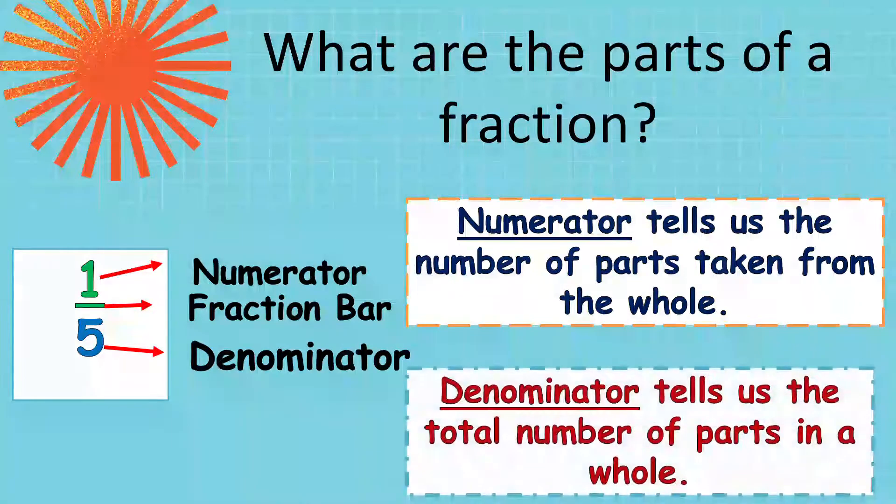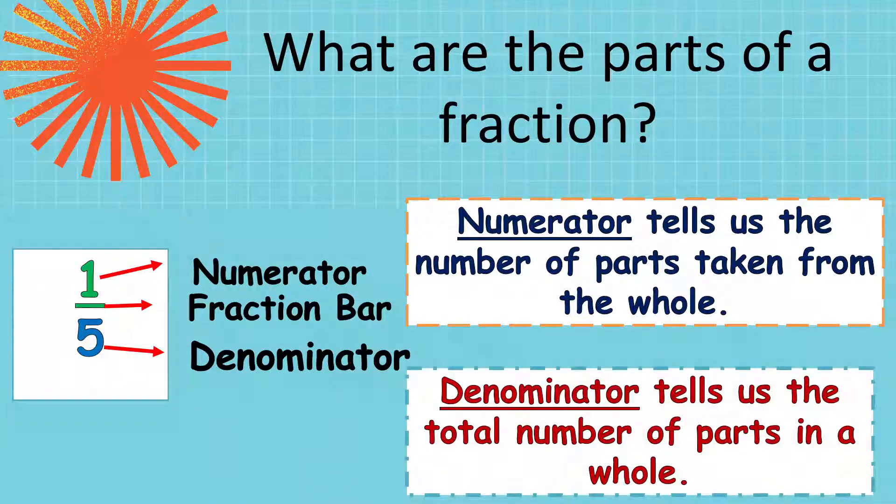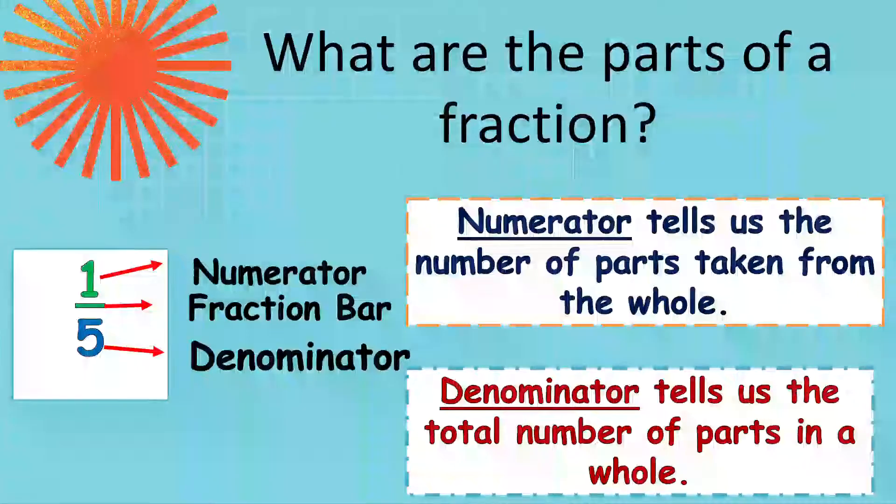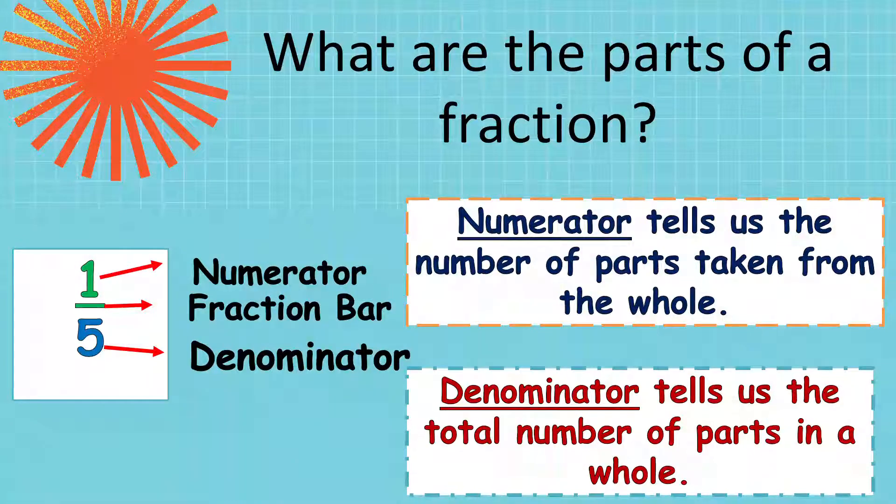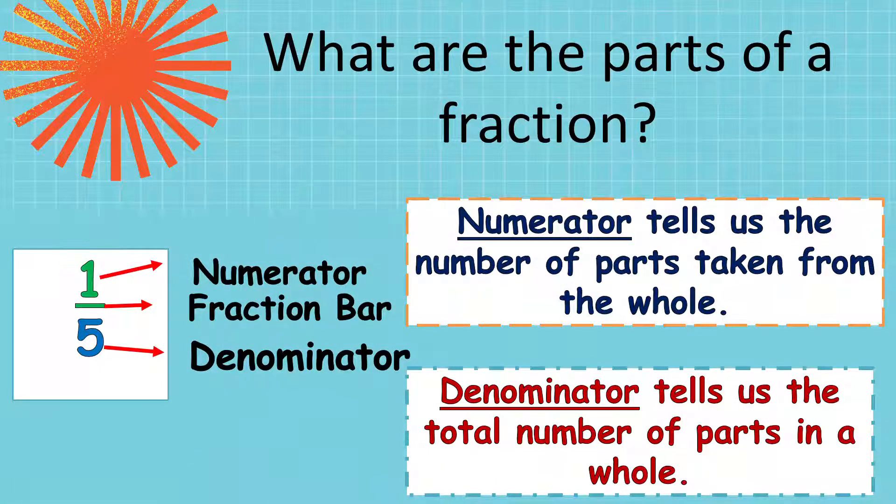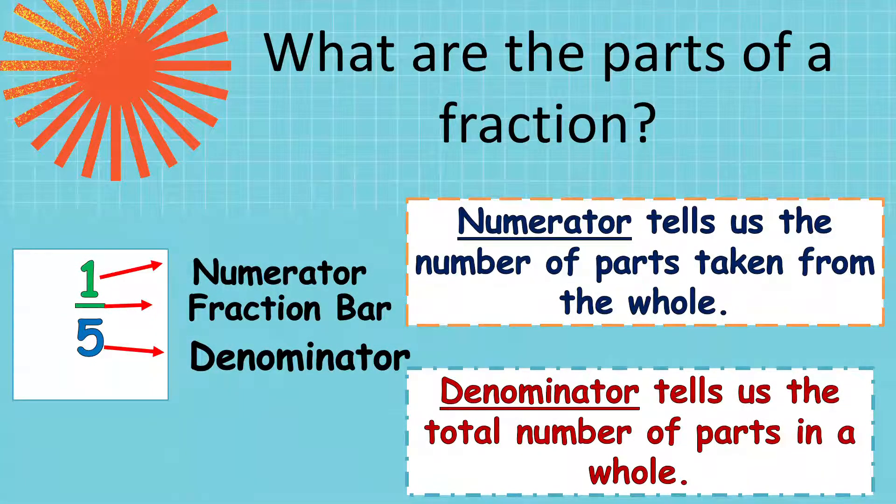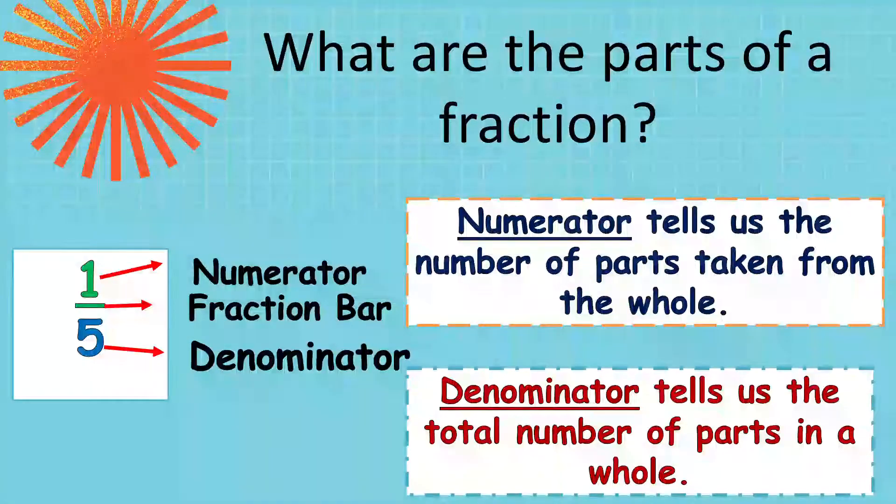And, the denominator tells us the total number of parts in a whole. So, there are 5 questions. 5 is the denominator. There are 8 equal parts in the pizza. So, 8 is the denominator.